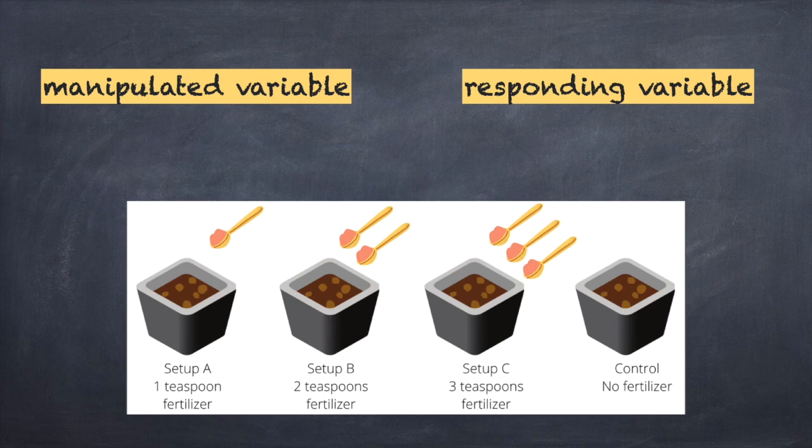Let us look at the four setups. Setup A with one teaspoon fertilizer. Setup B with two teaspoons of fertilizer. Setup C with three teaspoons of fertilizer. And the fourth setup, which is the control, with no fertilizer.